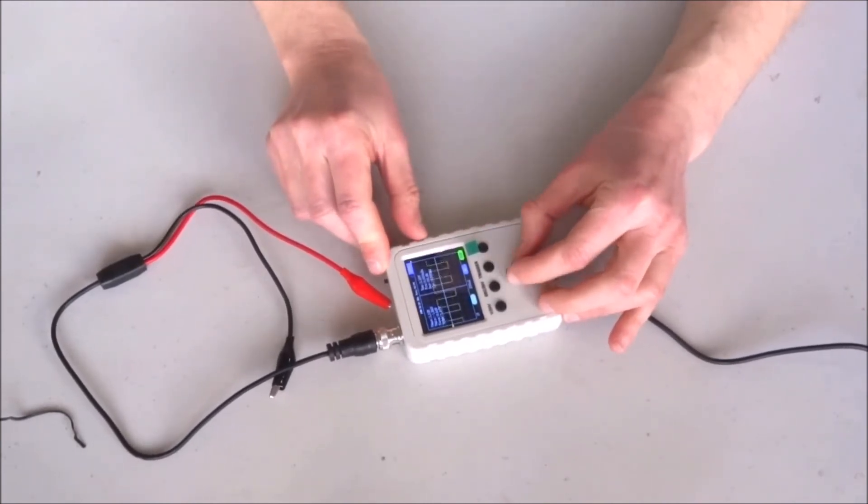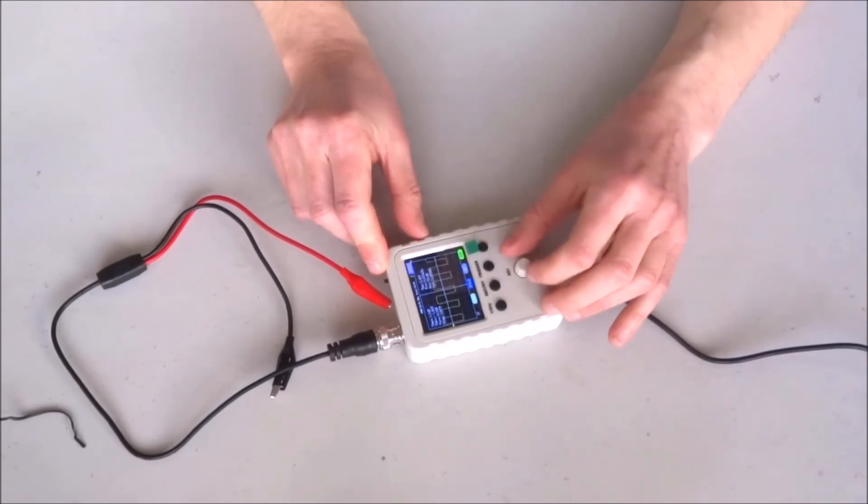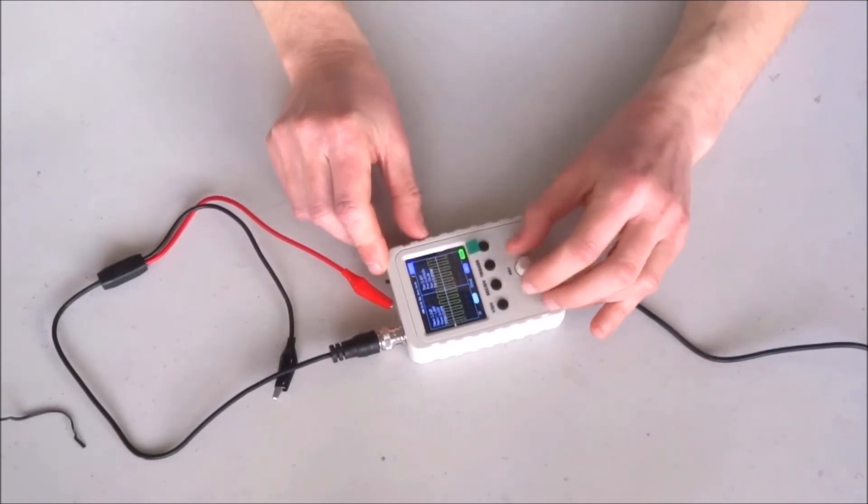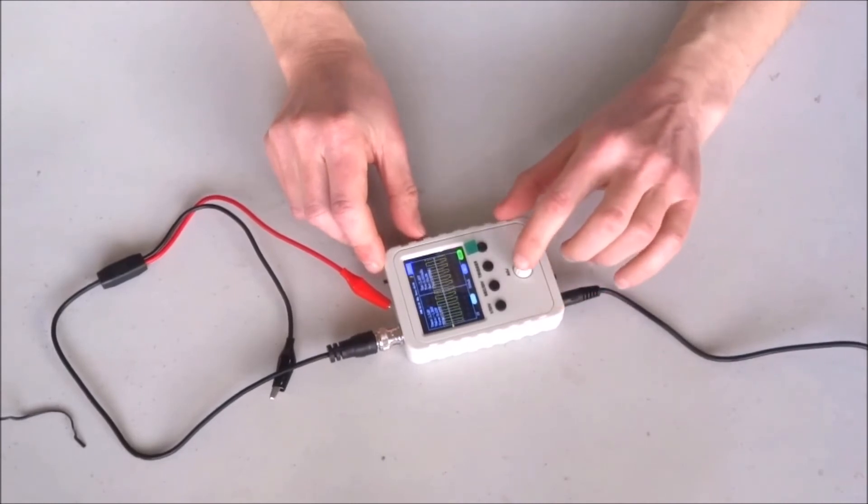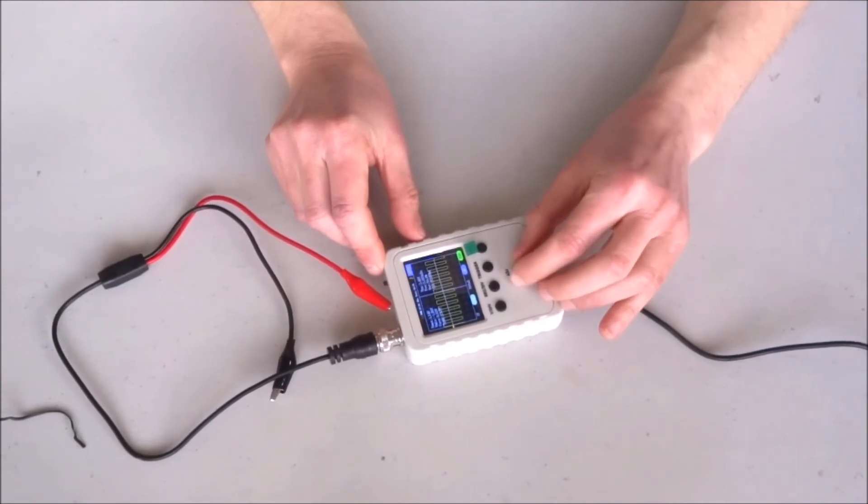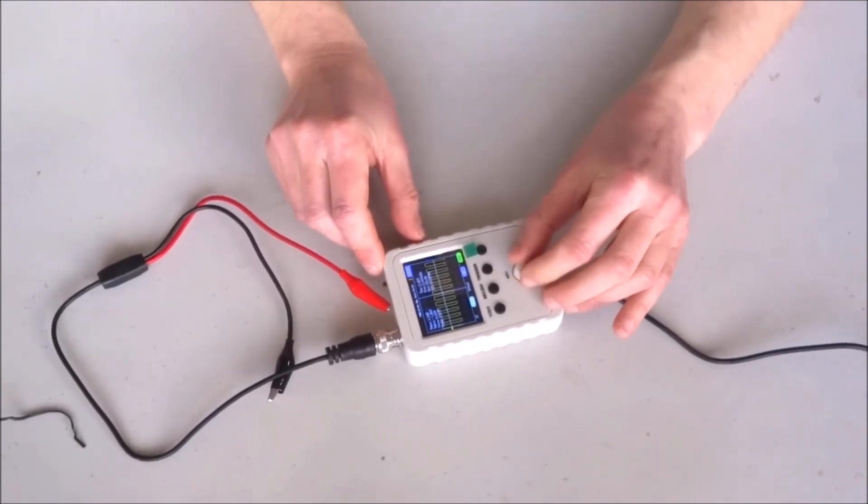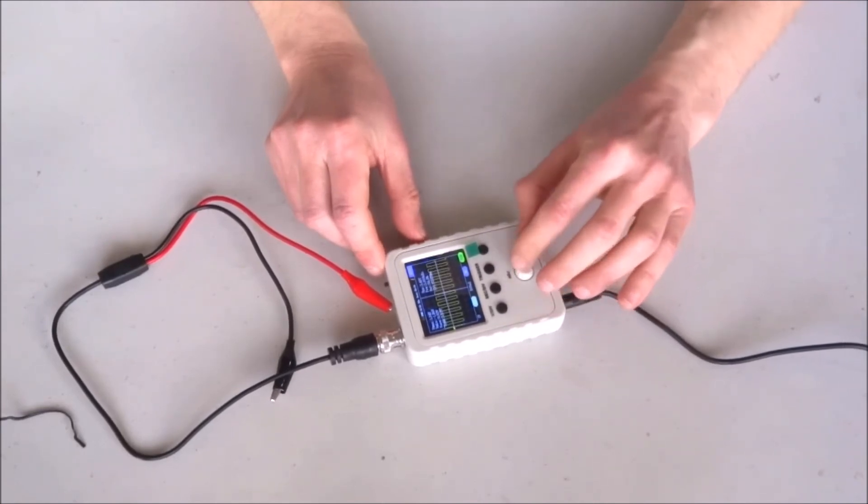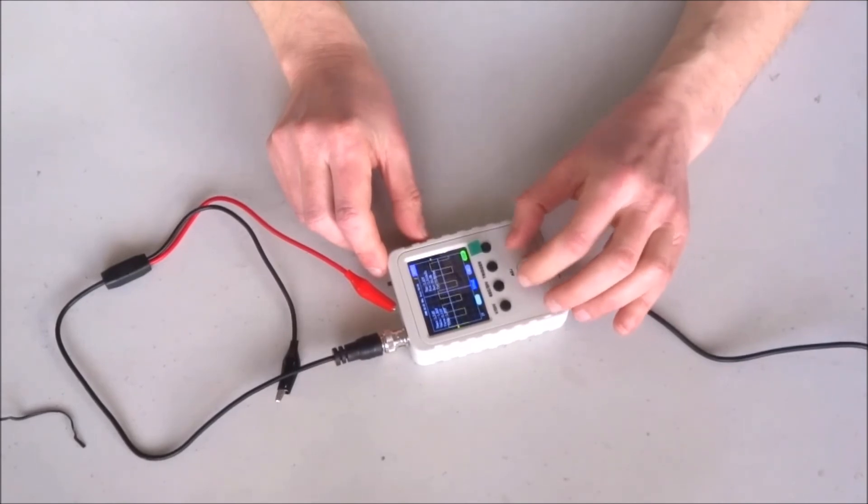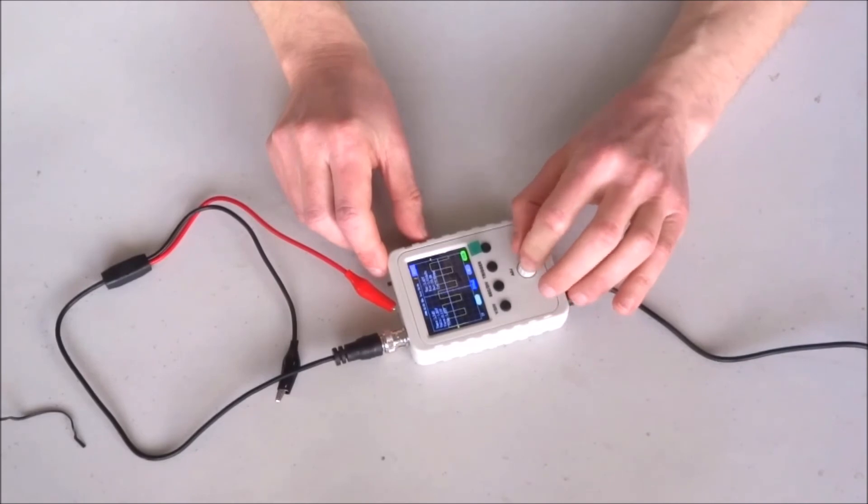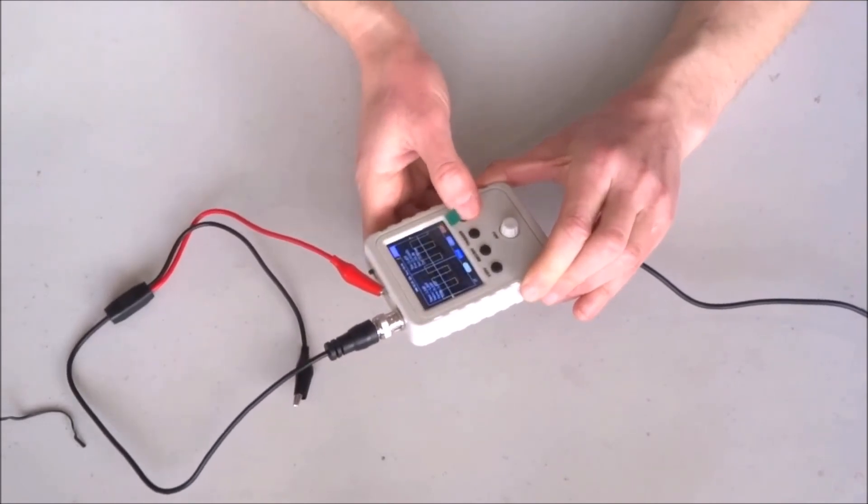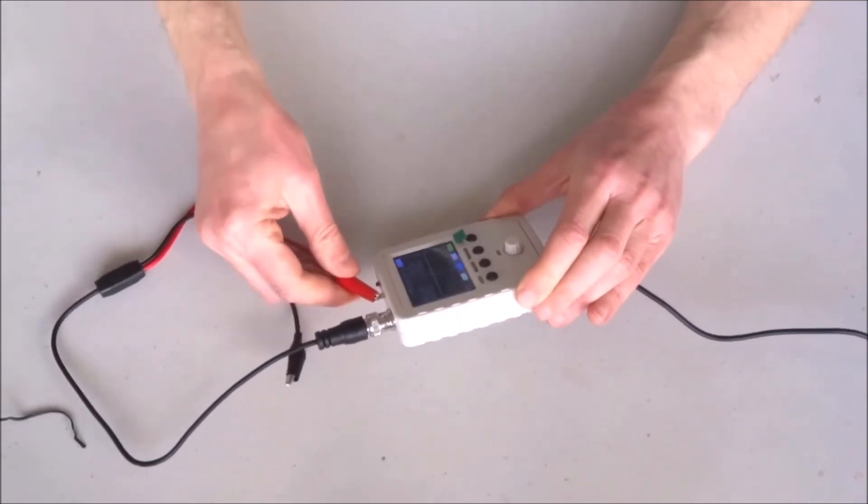This is the trigger sensitivity and the trigger level. We can click here and move faster or slower, so we're switching between fast and slow changing of values.